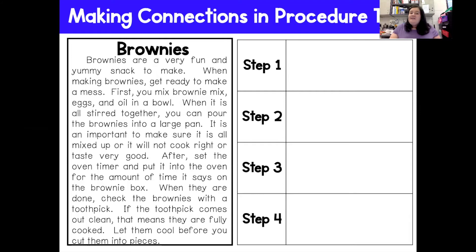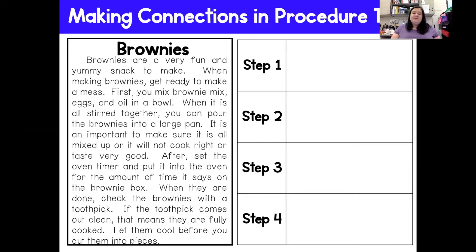So it says: Brownies are a very fun and yummy snack to make. When making brownies, get ready to make a mess. First, you mix the brownie mix, eggs, and oil in a bowl. When it is all stirred together, you pour the brownies into a large pan. It is important to make sure it is all mixed up or it will not cook right or taste very good. After, set the oven timer and put it into the oven for the amount of time it says on the brownie box. When they are done, check the brownies with a toothpick. If the toothpick comes out clean, that means they are fully cooked. Let them cool before you cut them into pieces.